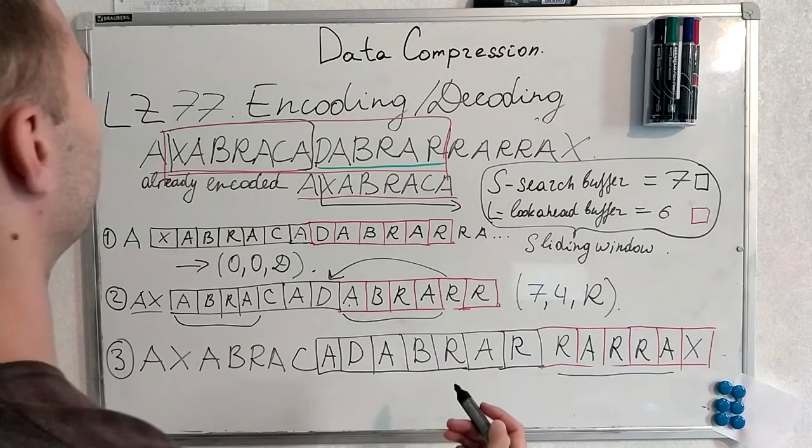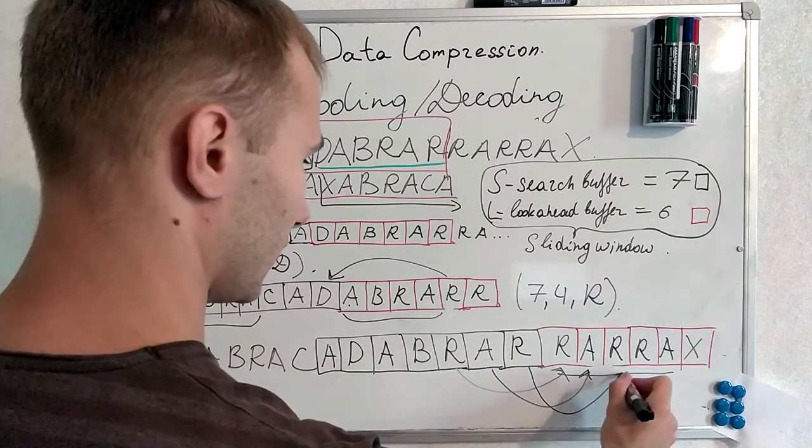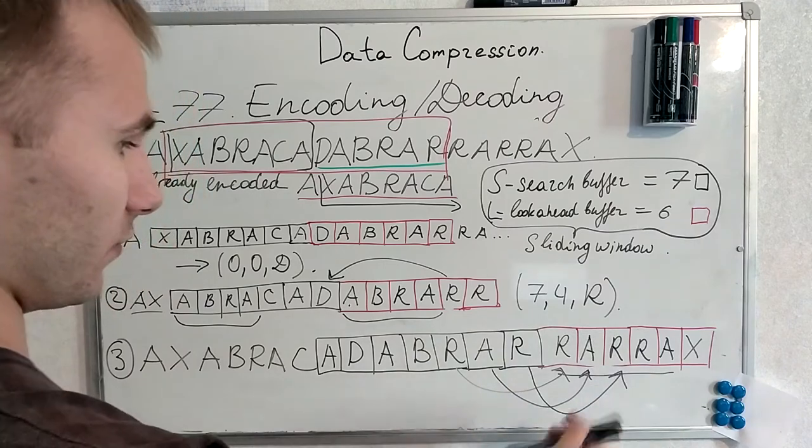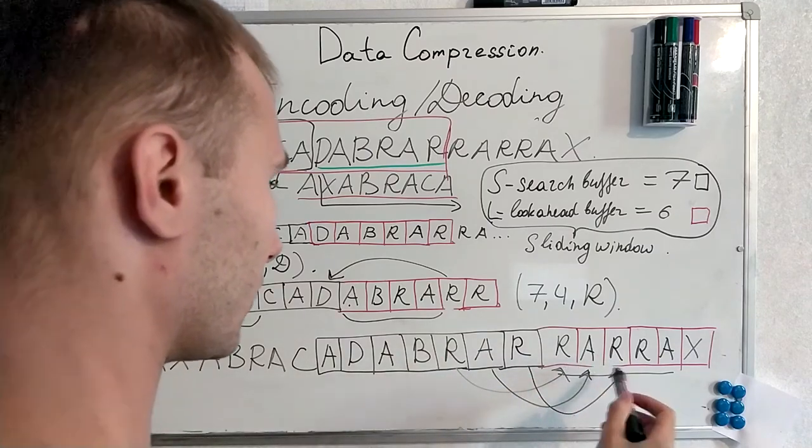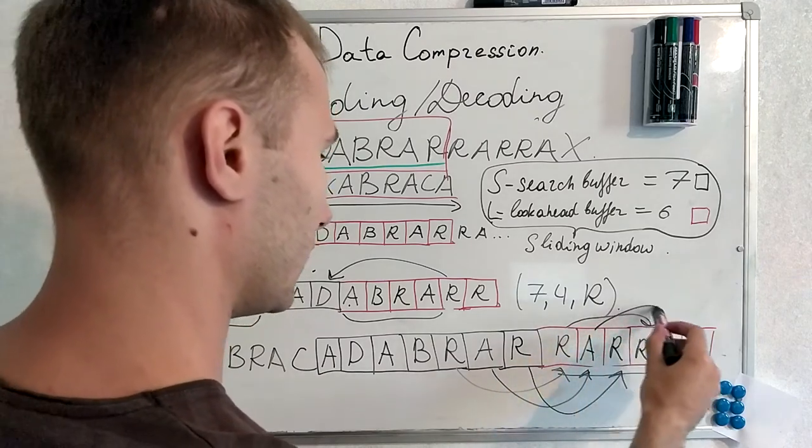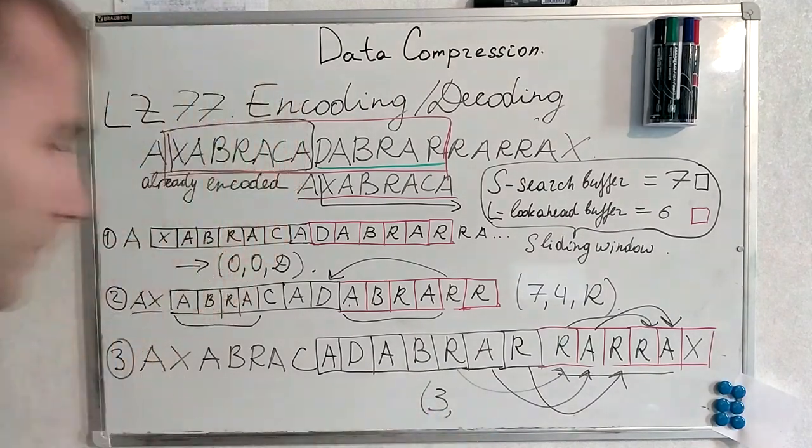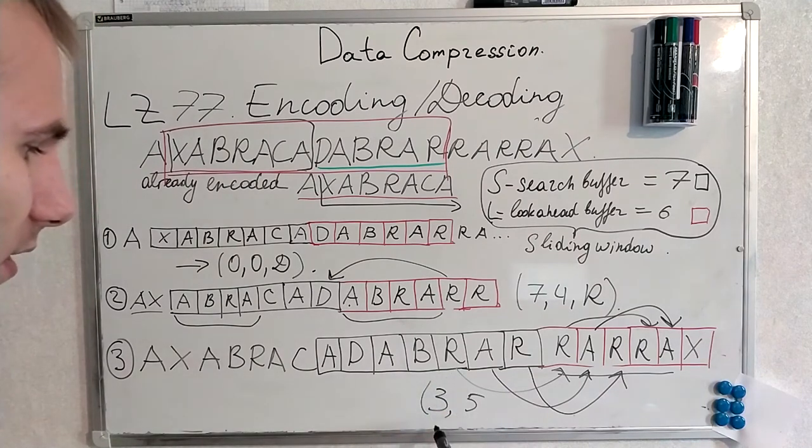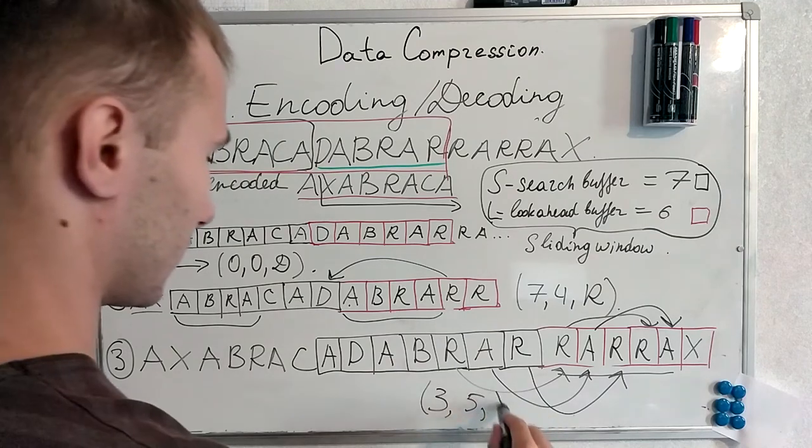Actually, actually it works in a very strange manner. This R refers to this. This A refers to this. This A refers to this. But now we are looking at this R. We are looking somehow in the future. Because this R is this R. And this A is this A. Thus we produce something like... 3 is the length of offset. 5 is the length of a matching board. Yeah, how could that be? That the offset is smaller number than the length of match. But this is the tricky part here. And the next symbol is X. And that's it. We are finished our encoding with LZ77.